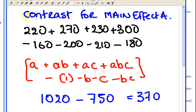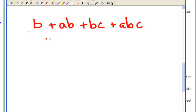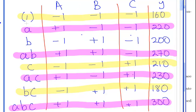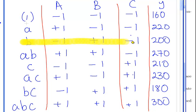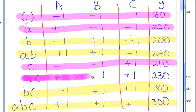The contrast for effect B is something very similar. Where B is high, we have B plus AB plus BC plus ABC and subtract where B is low: minus (1), minus A, minus C, minus AC. We do the exact same sort of thing: add up all the relevant terms and subtract all the other relevant terms. Where B is high: B, AB, BC, and ABC, and subtract where B is low.